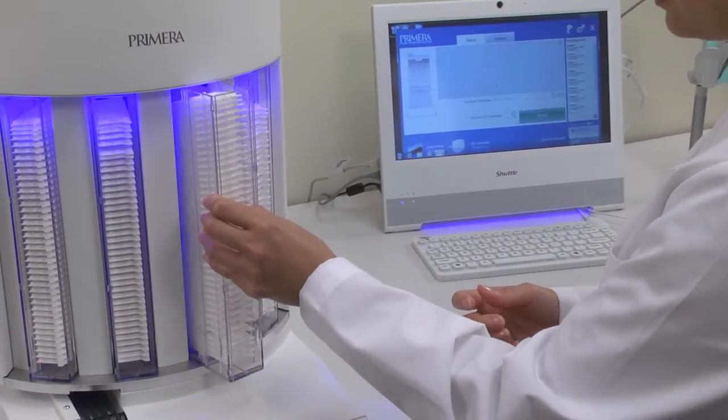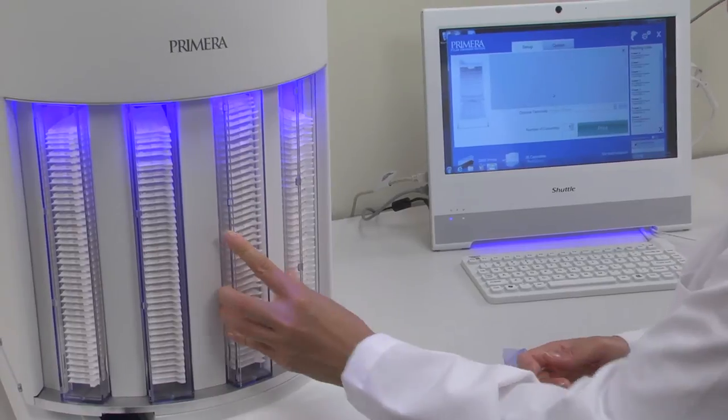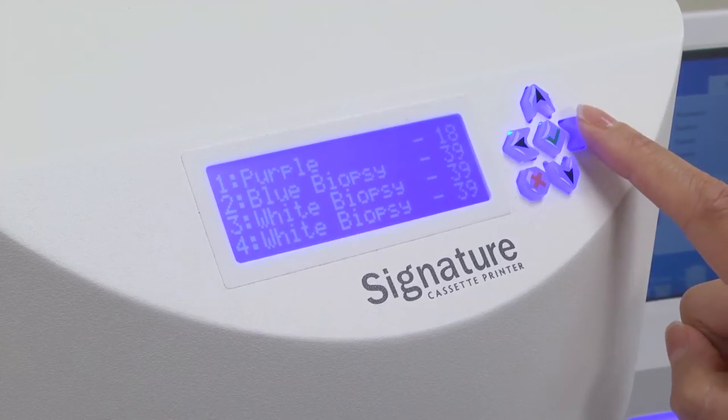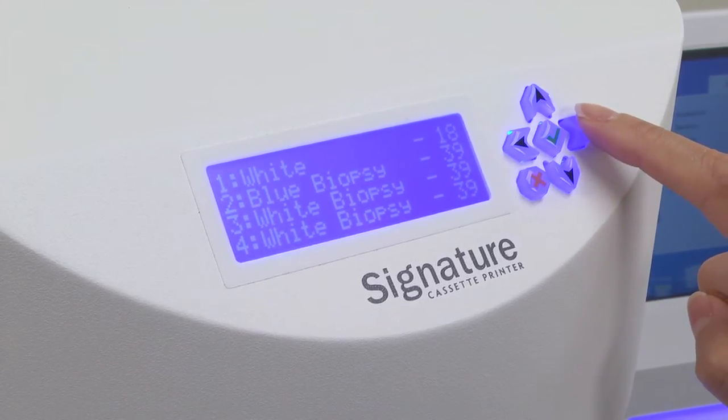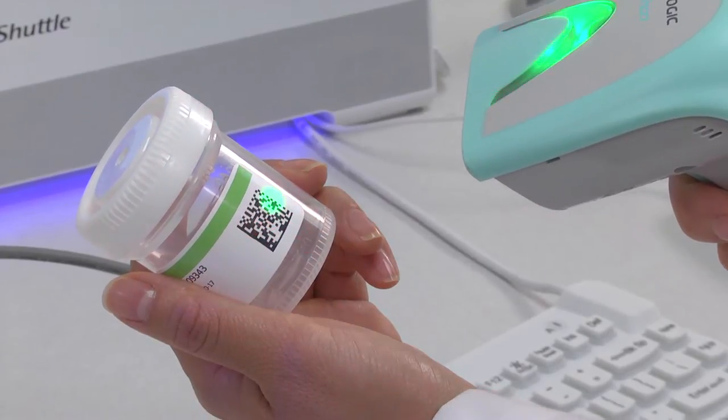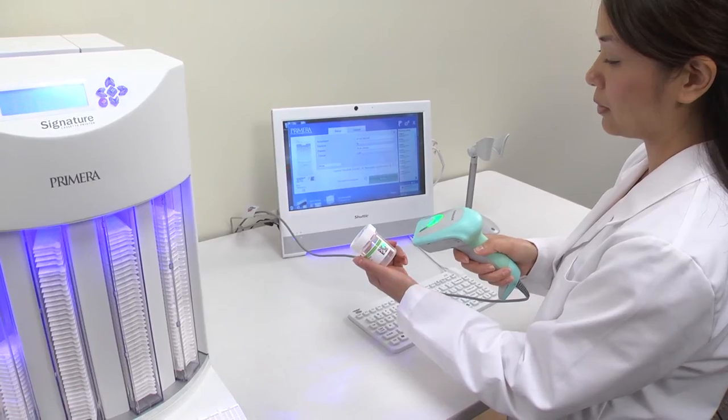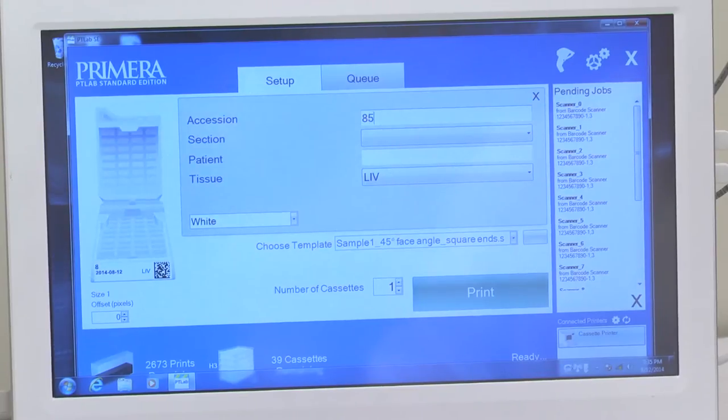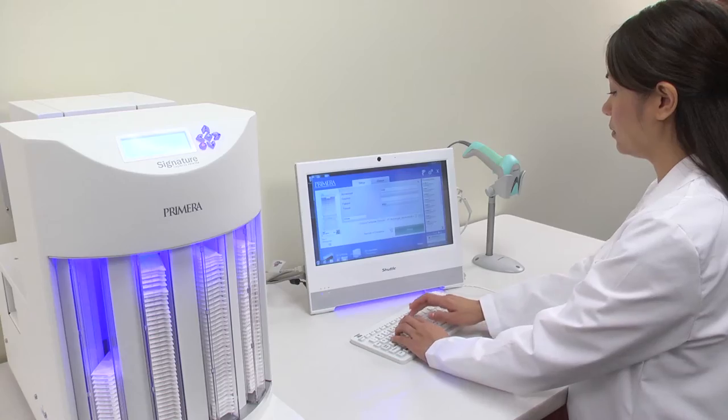Taped cassettes are easily loaded into the hoppers and placed into the unit. Front panel controls tell the machine what type of cassettes you'll be using. A barcode can then be scanned and information is automatically populated in the software. Any additional information can be added in Primera's PT lab software.